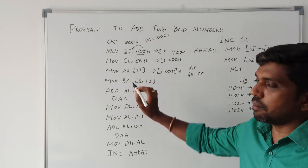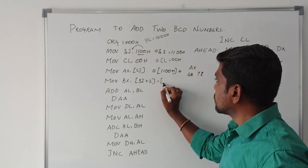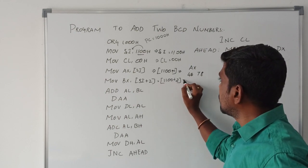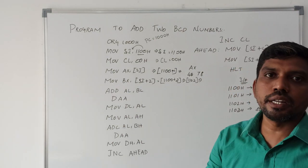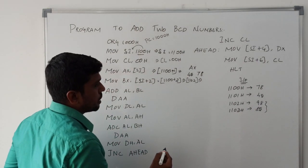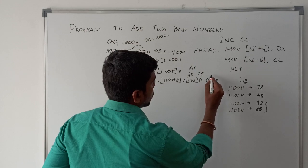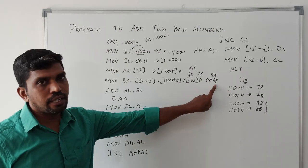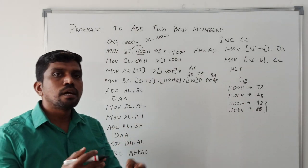After getting the first data, you get the second data, which is stored in BX register. The data is obtained from the memory location SI plus 2. SI value is 2100H plus 2 gives the new memory location 2102H. Whatever data is present at this memory location is transferred to BX register. The data is 98H moved to BL and 85H moved to BH, so BX value is 8598H. After getting the two register contents AX and BX, you apply the addition operation.